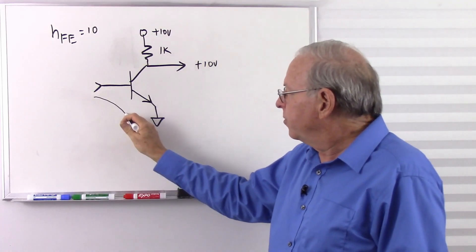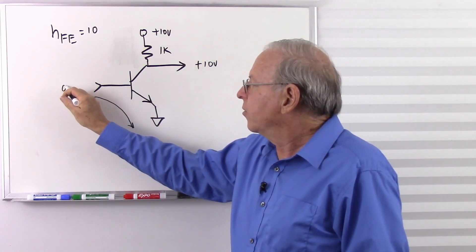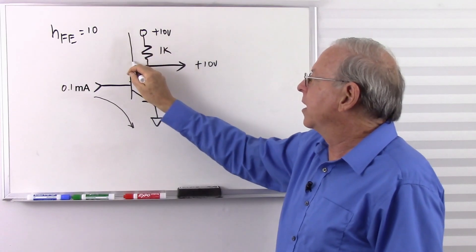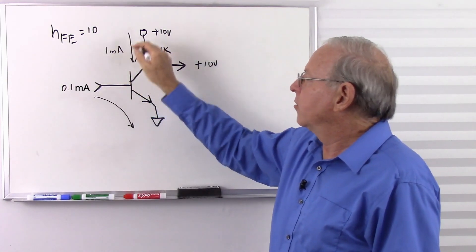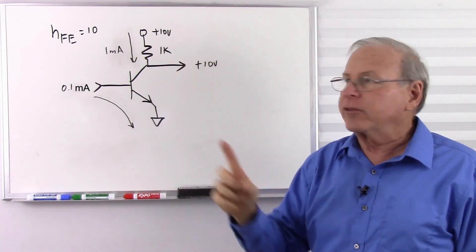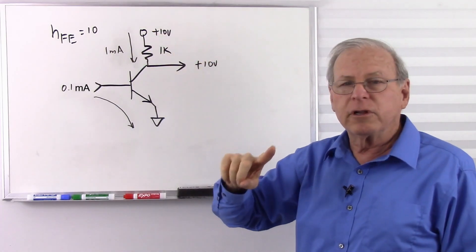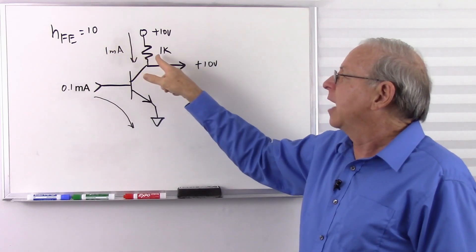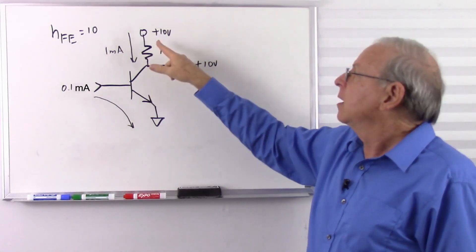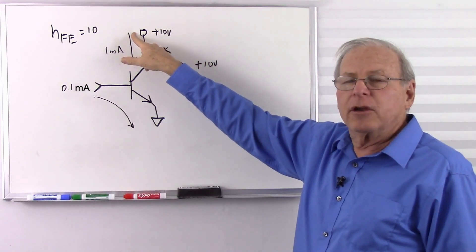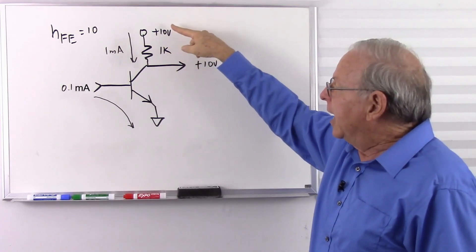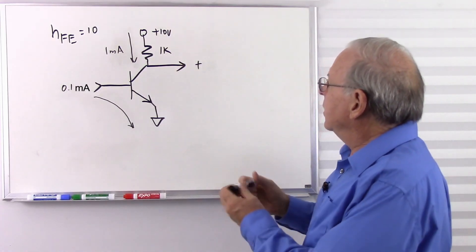Now let's put in some base current — 100 microamps, that's 0.1 milliamps flowing into the base. I expect 10 times that to flow into the collector, so I expect 1 milliamp into the collector, and that milliamp has to go through that resistor. Now I have current plus resistance, so I expect a voltage difference. 1 milliamp times 1k gives us 1 volt across this resistor. Starting with 10 volts and losing 1 volt, now I have 9 volts at the collector.